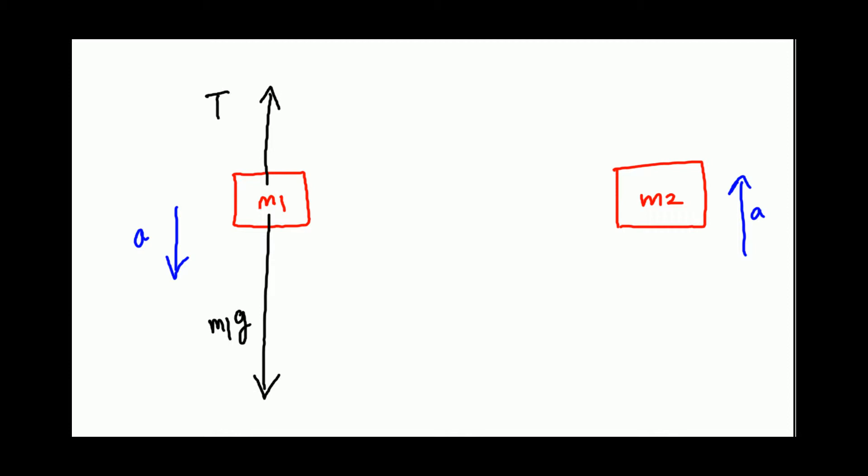All right, for mass M2, you have the same tension. And M2G is now gravitational force. Now, remember, M2 is accelerating up, so tension has to be greater than gravitational force. So we draw a very small arrow here. M2G, so the gravitational force on M2 is M2G.